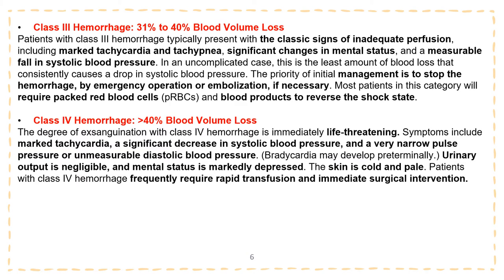Class three hemorrhage: 31 to 40% of blood volume loss. Patients typically present with classic signs of inadequate perfusion including marked tachycardia and tachypnea, significant changes in mental status and a measurable fall in systolic blood pressure. This is the least amount of blood loss that consistently causes a drop in systolic blood pressure. The priority of initial management is to stop the hemorrhage by emergency operation or embolization if necessary. Most patients in this category will require packed red blood cells and blood products to reverse the shock state.